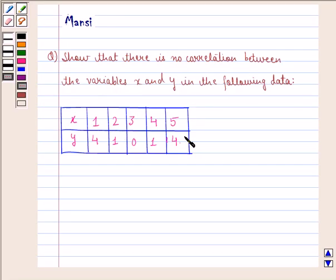We are given a table here. In the first row we have the x values: 1, 2, 3, 4, 5, and we have corresponding y values: 4, 1, 0, 1, 4 respectively.